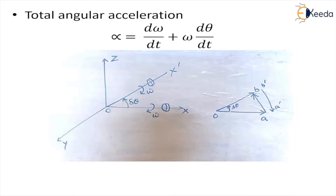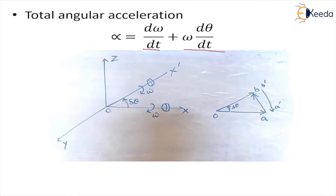Now whenever there is a change in angular velocity of a body, it can happen in three ways: one, by change in magnitude; second, by change in direction; third, by change in both magnitude and position. We derived an equation for total angular acceleration where change in magnitude was denoted by d omega/dt, change in direction by omega d theta/dt, and angular acceleration by alpha. This equation applies when both magnitude and direction of axis of spin are changing.